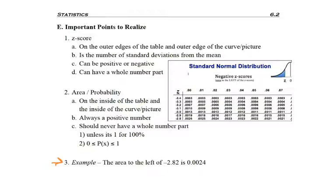Right away, I know that the negative 2.82 is my z-score and that the 0.0024 is probability or area.